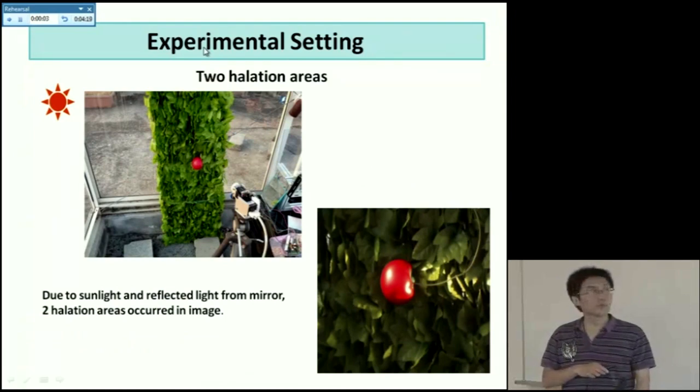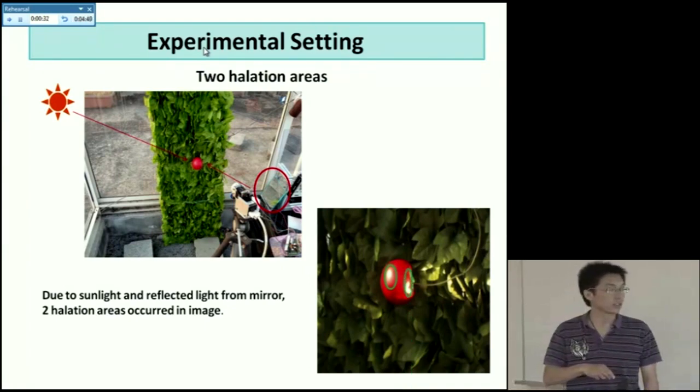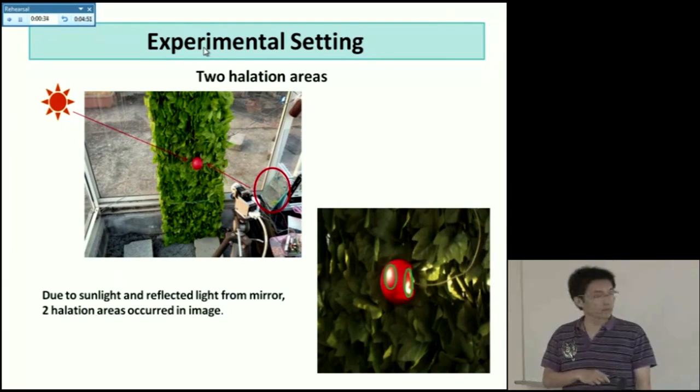Because we want to solve the multiple halation area problem, in this experiment, one halation is caused by the sun, appearing on the left part. And because of the reflective light from this mirror I set here, another right part halation can be observed on the surface. So by this, two halation areas occurred in these images.